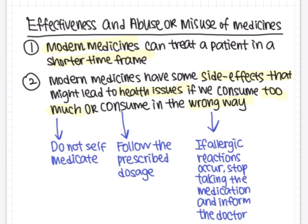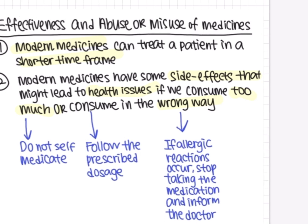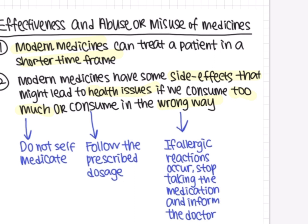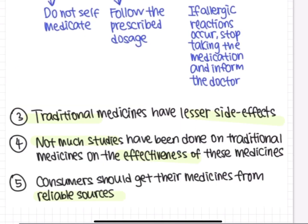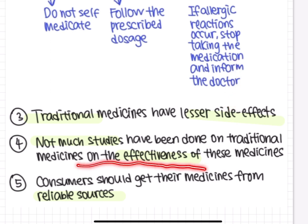Regarding the effectiveness, misuse, and abuse of medicines: modern medicines can treat a patient within a short time frame but also have side effects that may lead to health issues if consumed too much or incorrectly. To prevent this, do not self-medicate — follow the prescribed dosage from the doctor. If allergic reactions occur, stop taking the medication and inform the doctor so they can provide an alternative. Traditional medicines have fewer side effects but work more slowly, and not much research has been done on their effectiveness. Always get medicines from reliable sources.